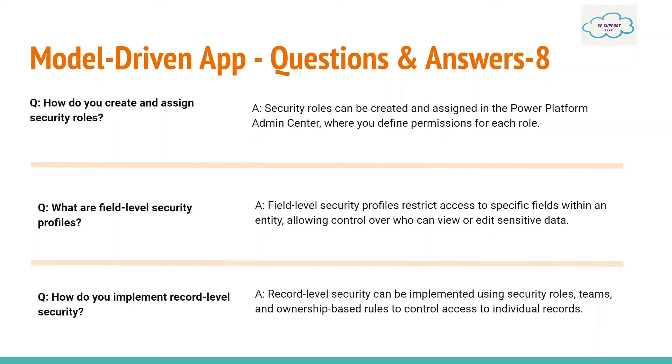Next question: How do you implement record-level security? Record-level security can be implemented using security rules, teams, and ownership-based rules to control access to individual records.